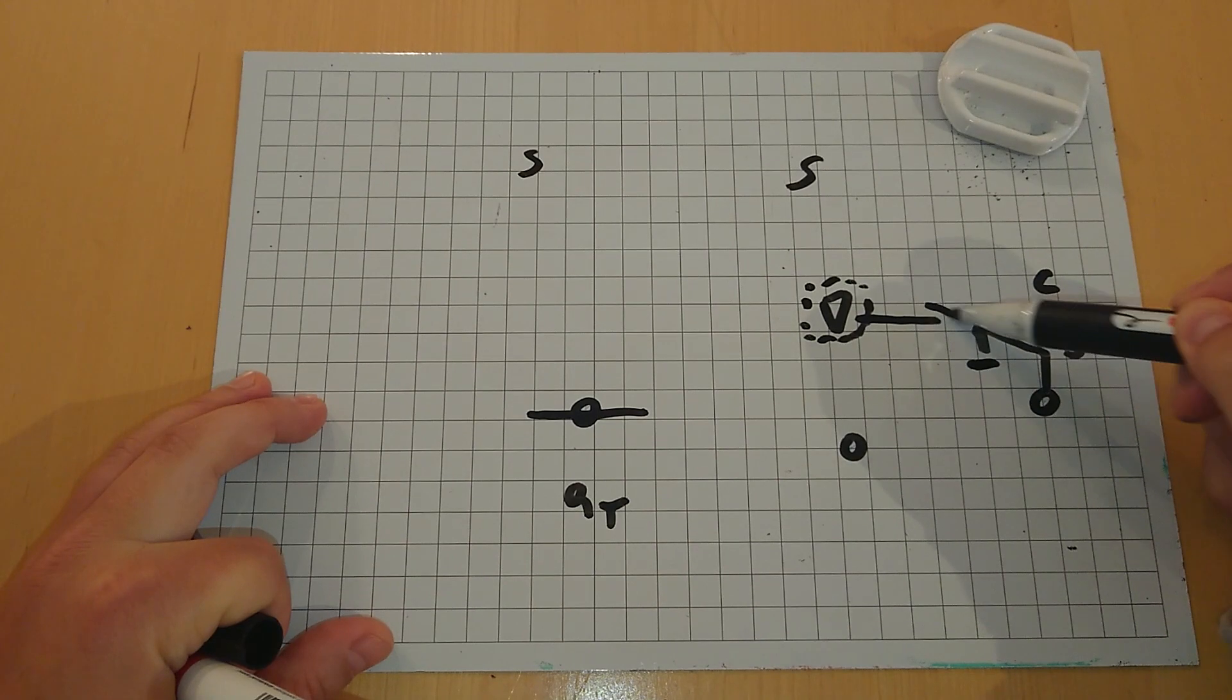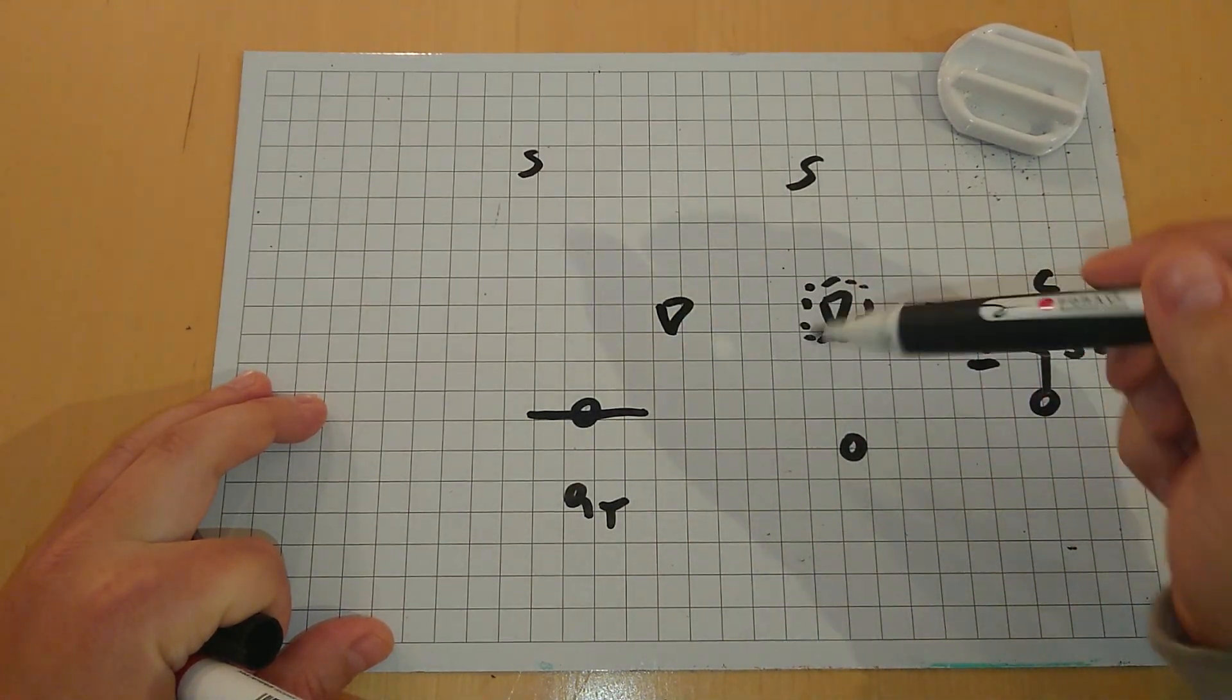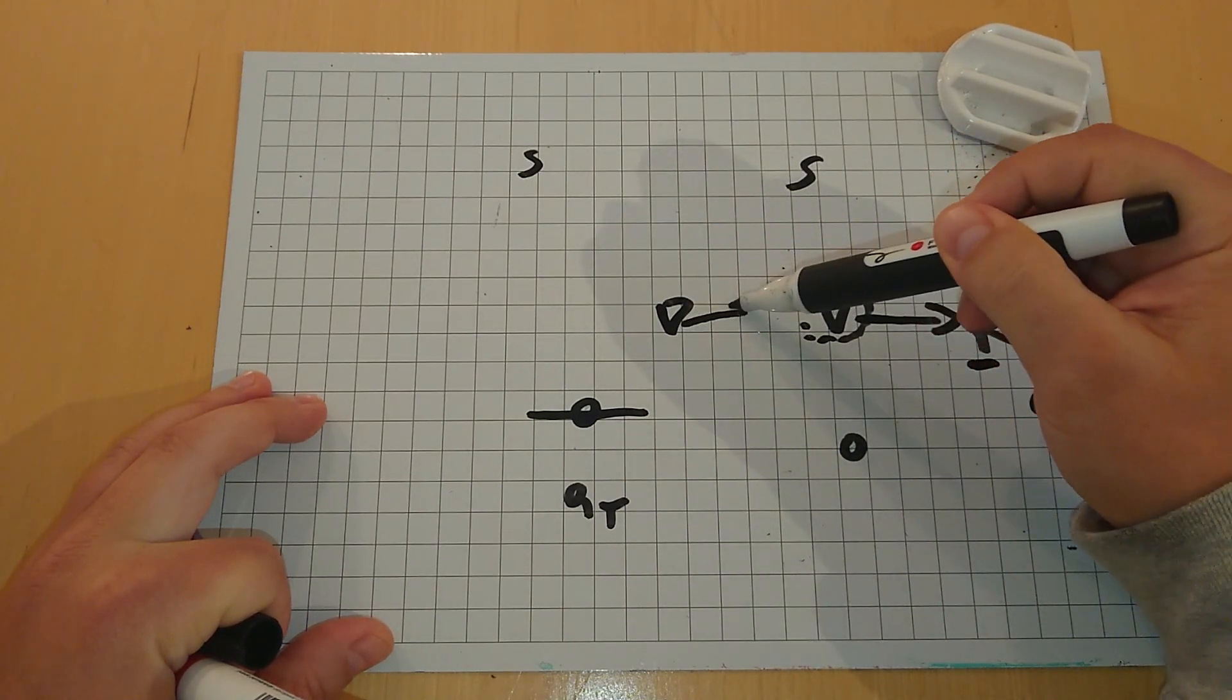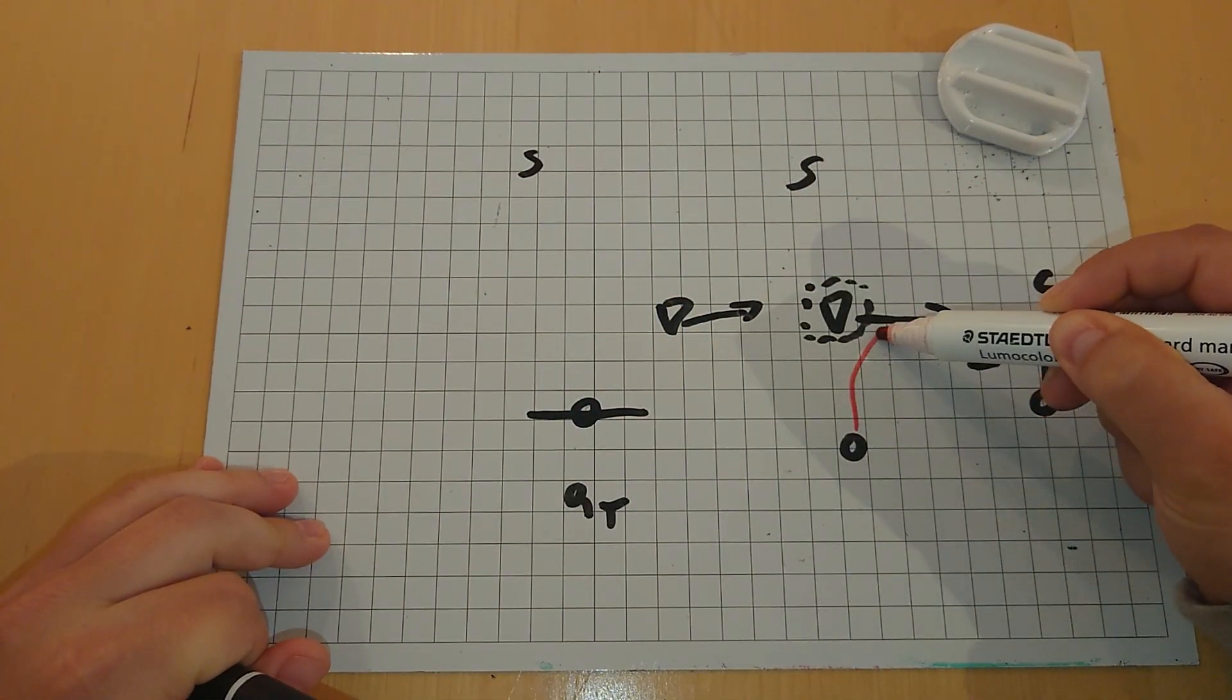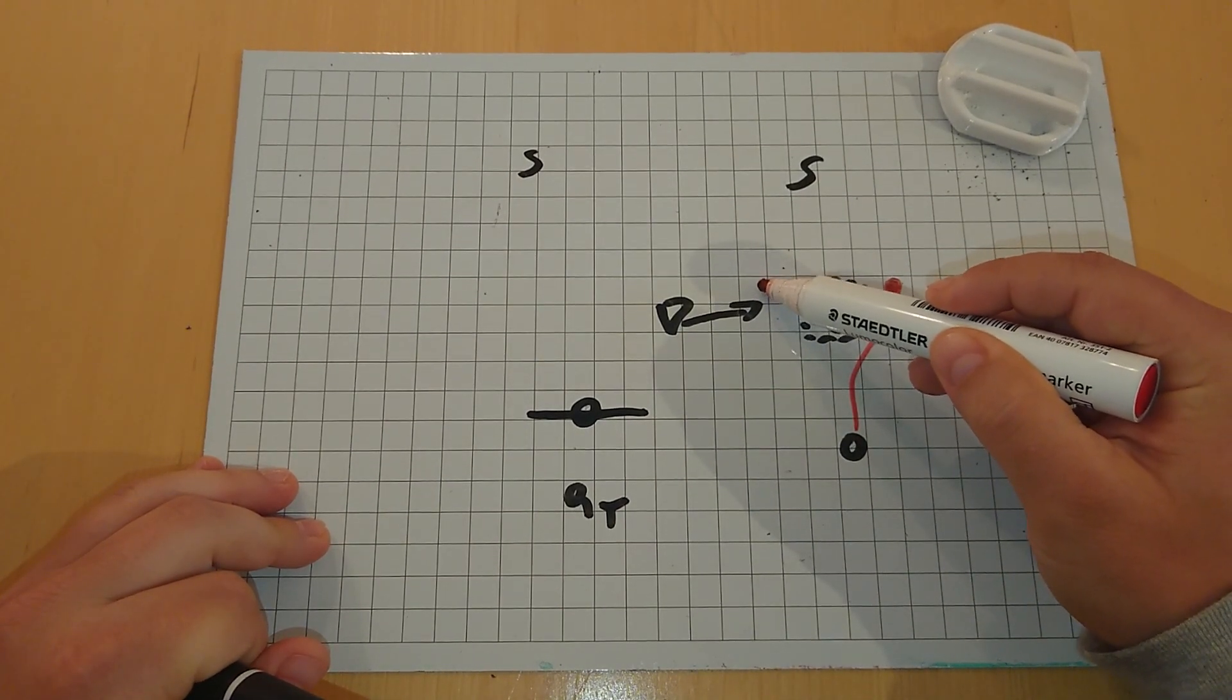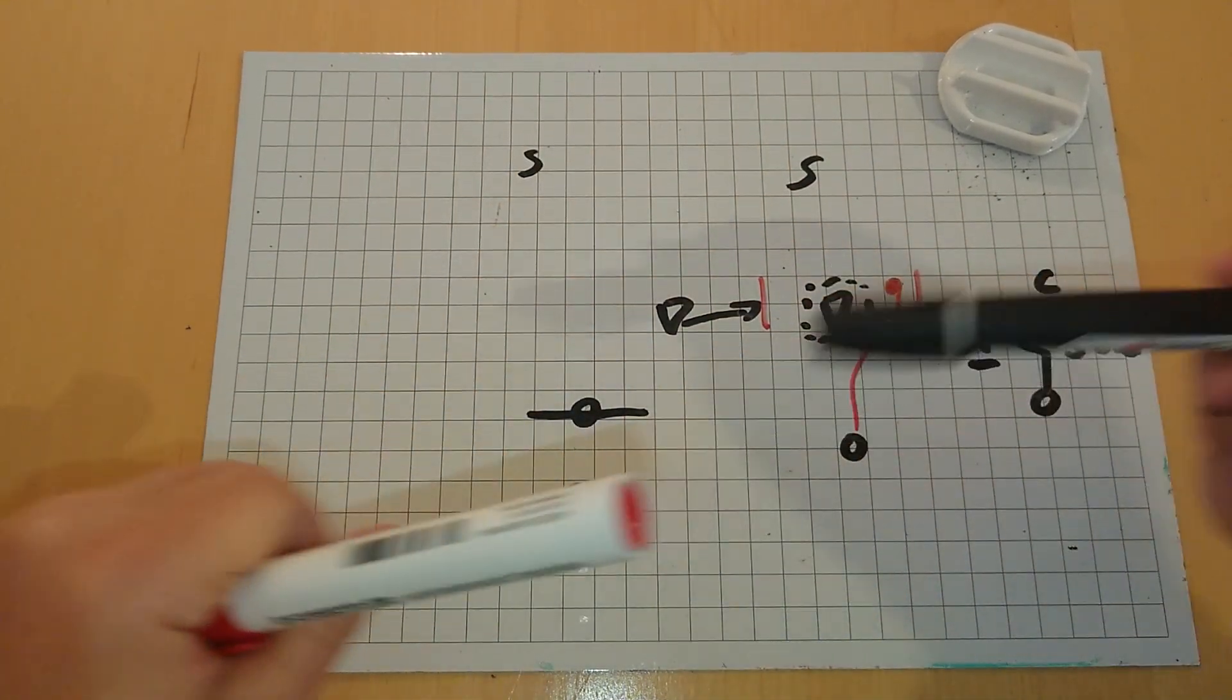We throw the outside receiver every time unless the flat defender widens hard. But if this guy widens hard, that means usually that this linebacker, the next linebacker inside, also widens hard. So we want to make sure with this win route in here, if he's widening, that we widen with him.